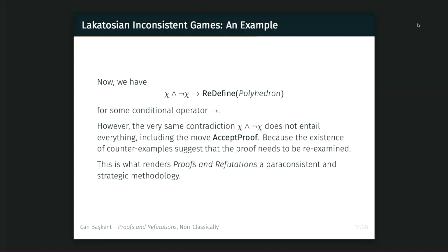We can't just say: there's a contradiction, let's accept the proof and move on. We don't say that. That means that from a contradiction, there are some propositions that do not follow. This simple observation, I think, shows that proofs and refutations is indeed paraconsistent.